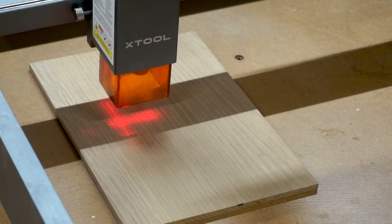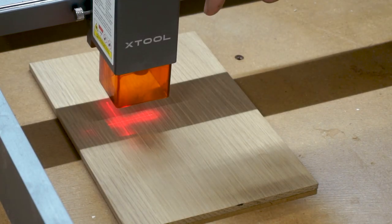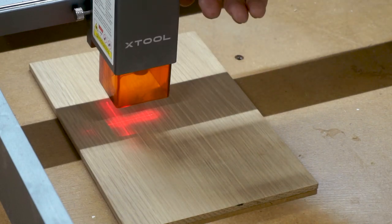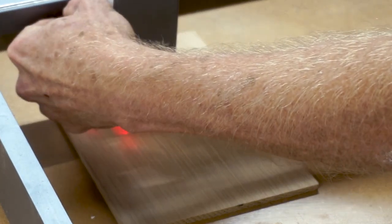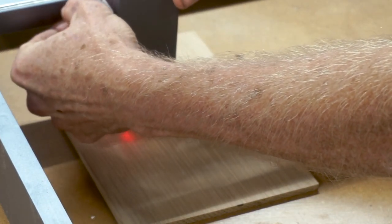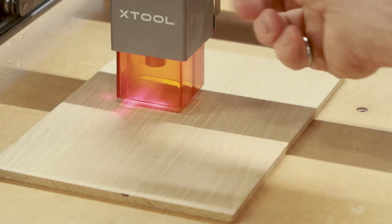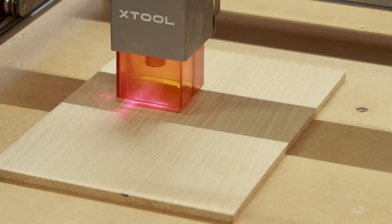So one thing I like about this laser compared to my other one is it's really easy to focus. All you do is you bring down this little lever. Lower it until it touches the work piece. Screw it in and then raise that back up. Now it's focused. That's pretty cool.